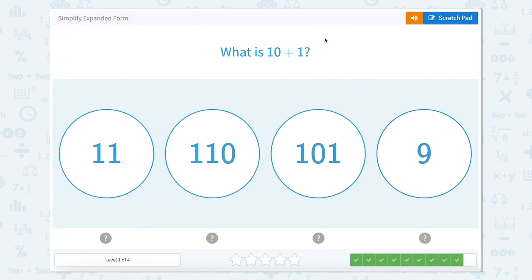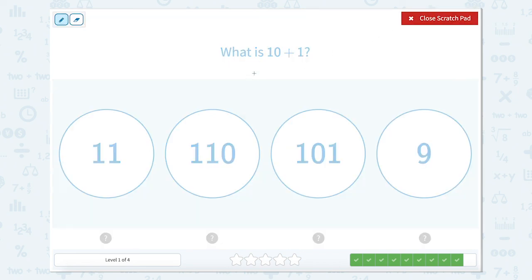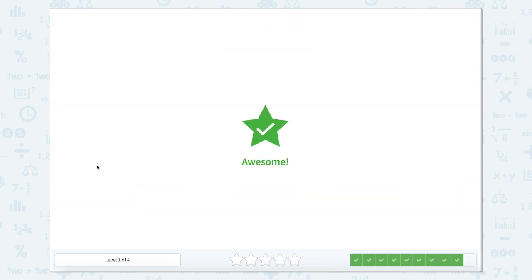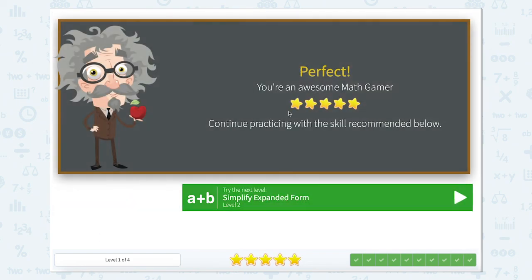And last one. What is 10 plus 1? Well, we know 10 plus 1 equals 11. And this bubble over here is equal to 11. Nice work.